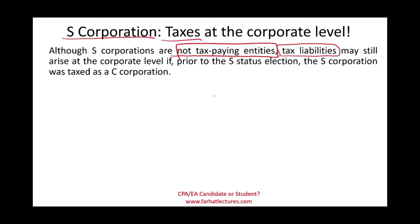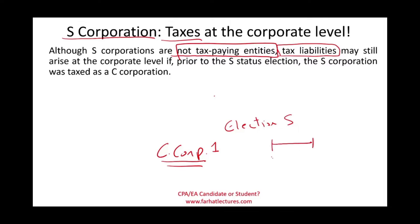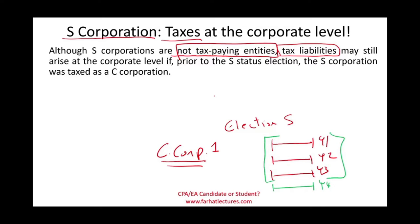All S corporations start as C corporations. S corporation status is an election, so the shareholders elect to be treated as an S corporation. They could have been a C corporation for one second — the corporation is created, they file the election, and they want to be treated as an S corporation. But in certain circumstances, maybe they were a C corporation for several years — year one, two, three — then switched to S status starting year four.